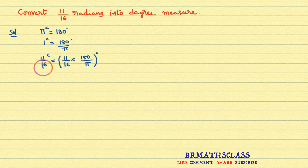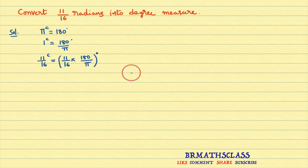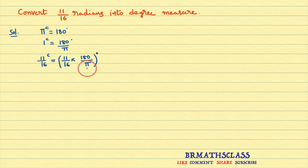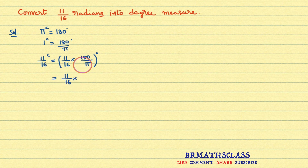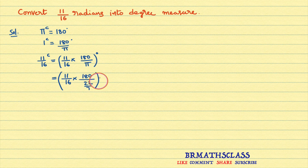I have written 11 pi by 16 radians into degree measure. Now we know that in degree measure, the angle can be further divided into degrees, minutes and seconds. So here I need to simplify this expression. While converting radian measure into degree measure, in place of pi we can write 22 by 7. So now I will simplify this by writing 22 by 7 in place of pi. That equals 11 divided by 16 into 180 divided by 22 divided by 7, in degree measure.